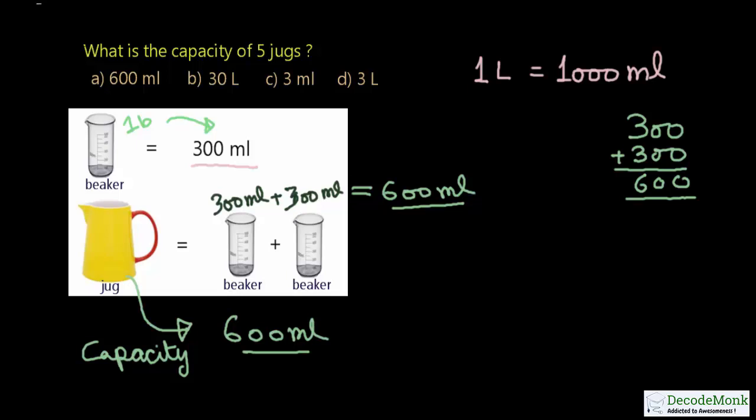The question asks for the capacity of 5 jugs. Since one jug is 600 ml, the capacity of 5 jugs will be 5 times 600. To find this, we multiply 600 by 5.